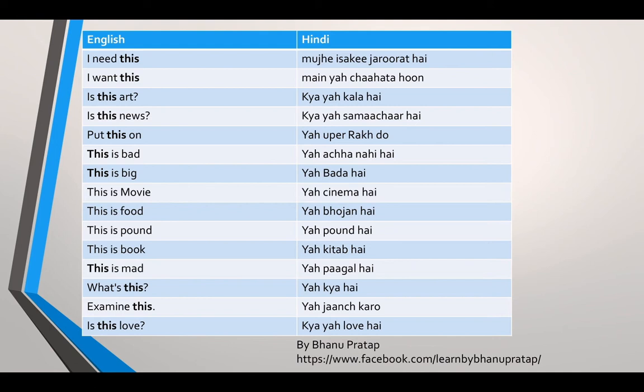This is pound — Yeh pound hai. This is book — Yeh kitab hai. The Hindi of 'book' is kitab. Yeh kitab hai. This is mad — Yeh pagal hai. The Hindi of 'mad' is pagal. Yeh pagal hai.